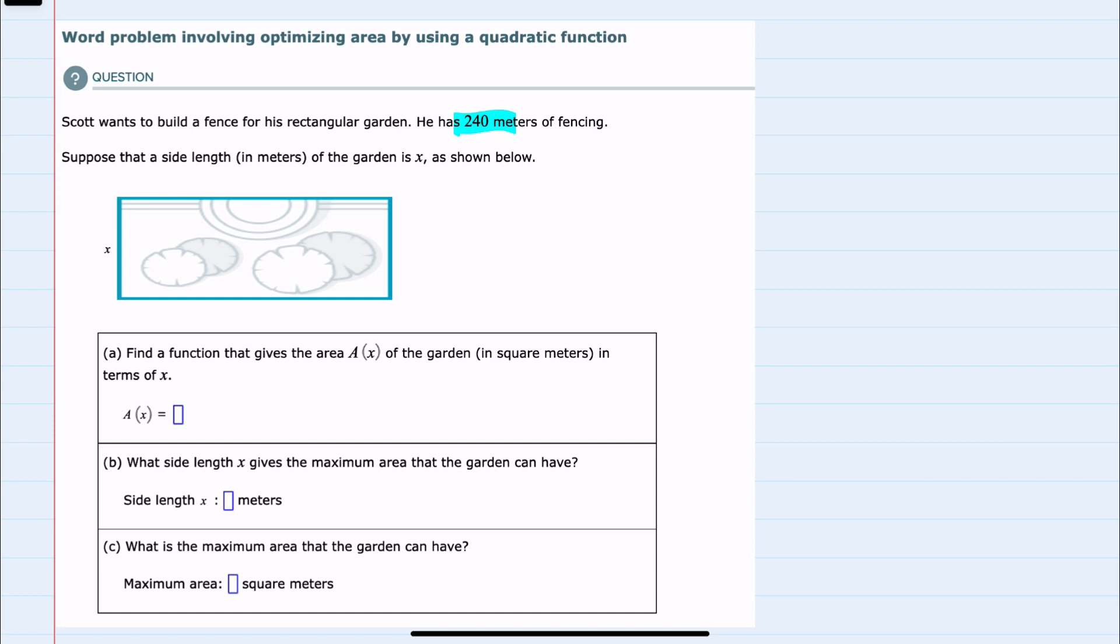Suppose that the side length in meters of the garden is x, as shown below. We're asked a few questions here, the first being to find a function that gives the area as a function of x of the garden in square meters in terms of x. So first, just to recognize that we don't know the width here, I'm going to call that y.